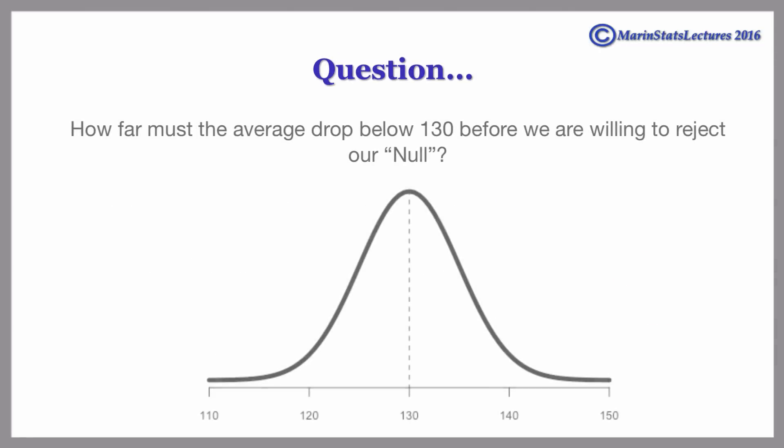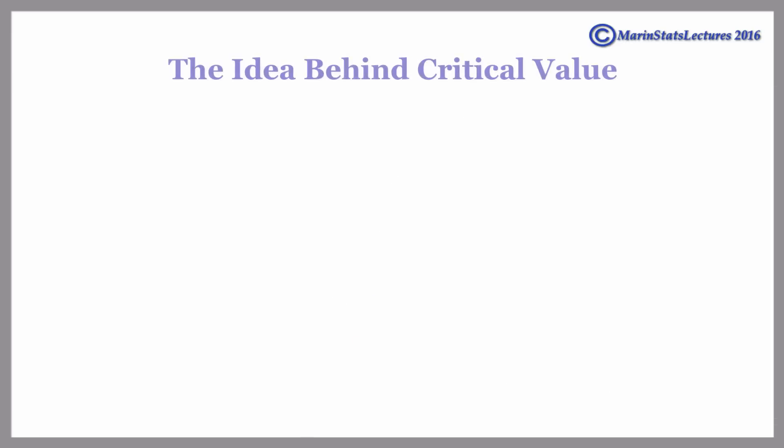We've already noted that we must ask the question, how far must the average drop below 130 before we are willing to reject our null? This is the idea behind a critical value.